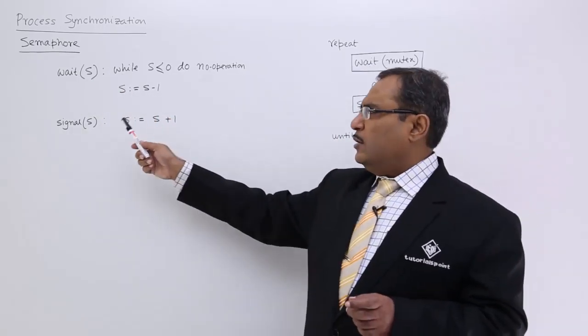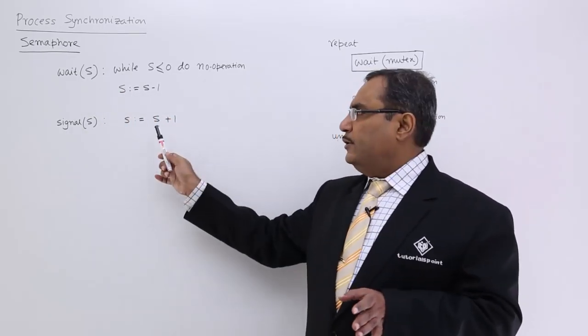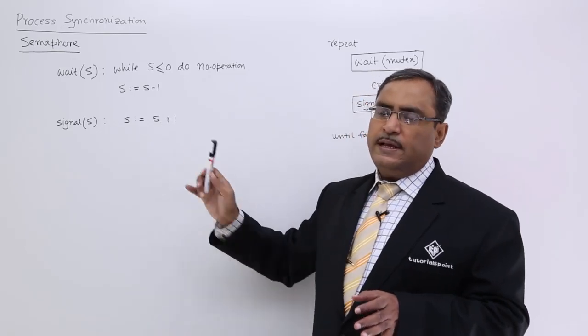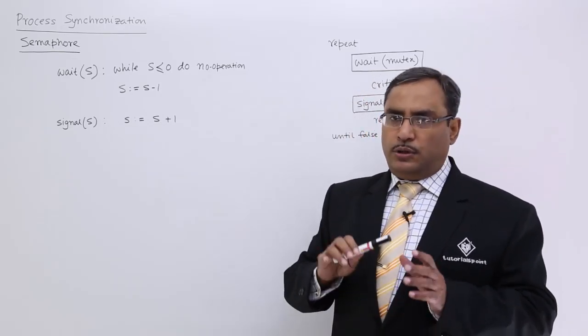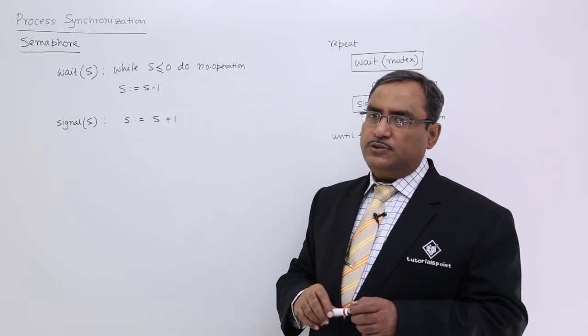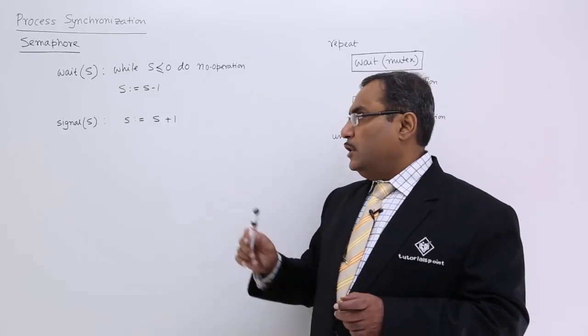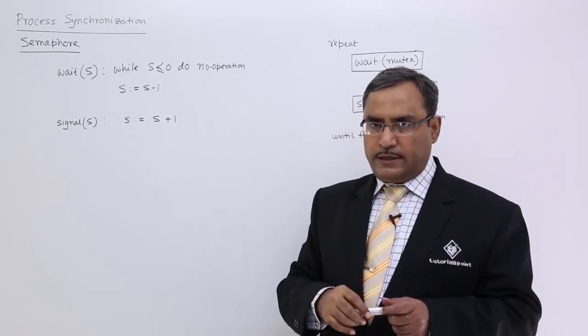In the signal operation, a very simple statement: it will just increment the value of S by 1. These two are the atomic operations we have on a semaphore.